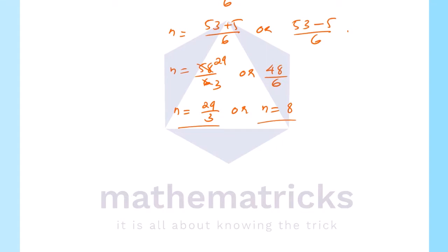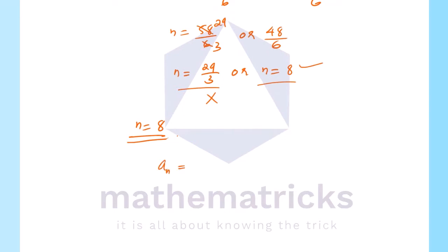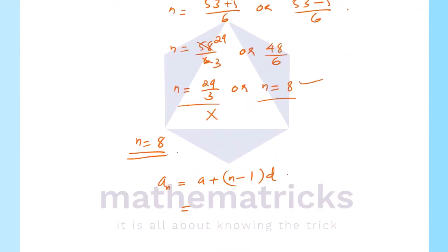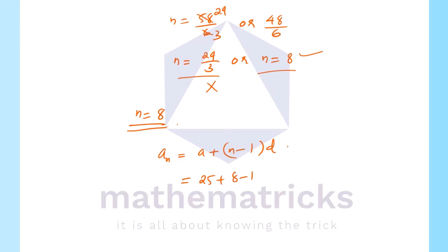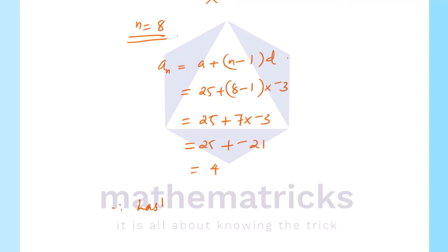The number of terms n = 8 is the valid solution since 29/3 is a fraction and not suitable. So n = 8.